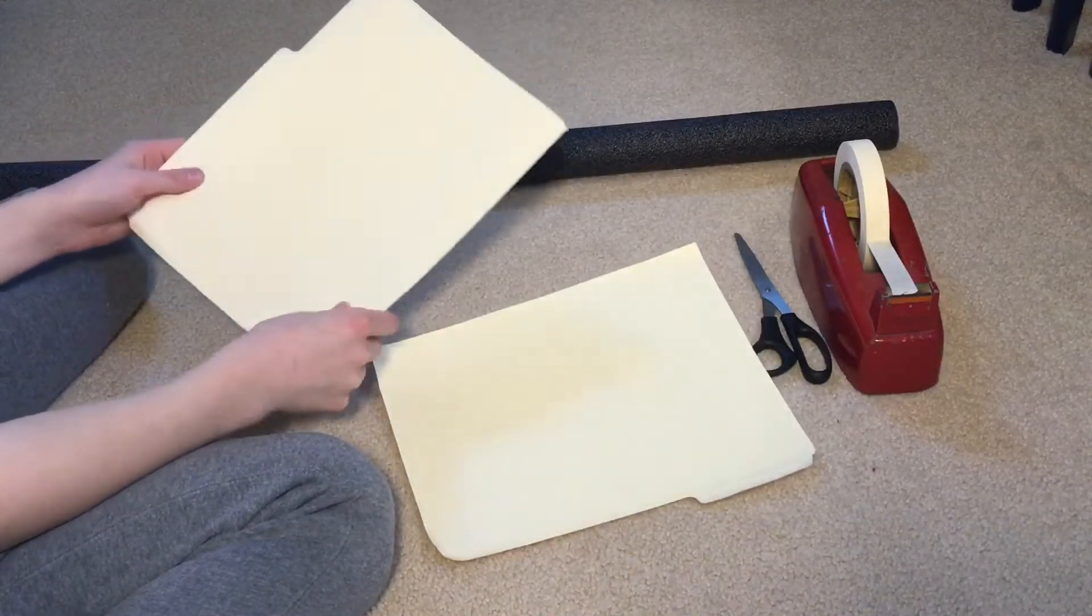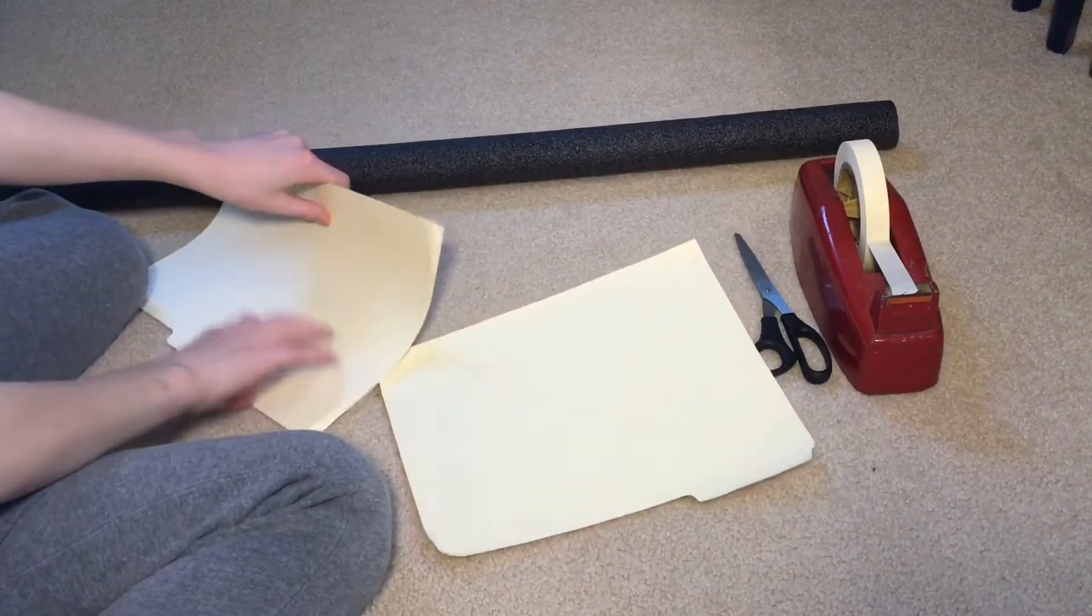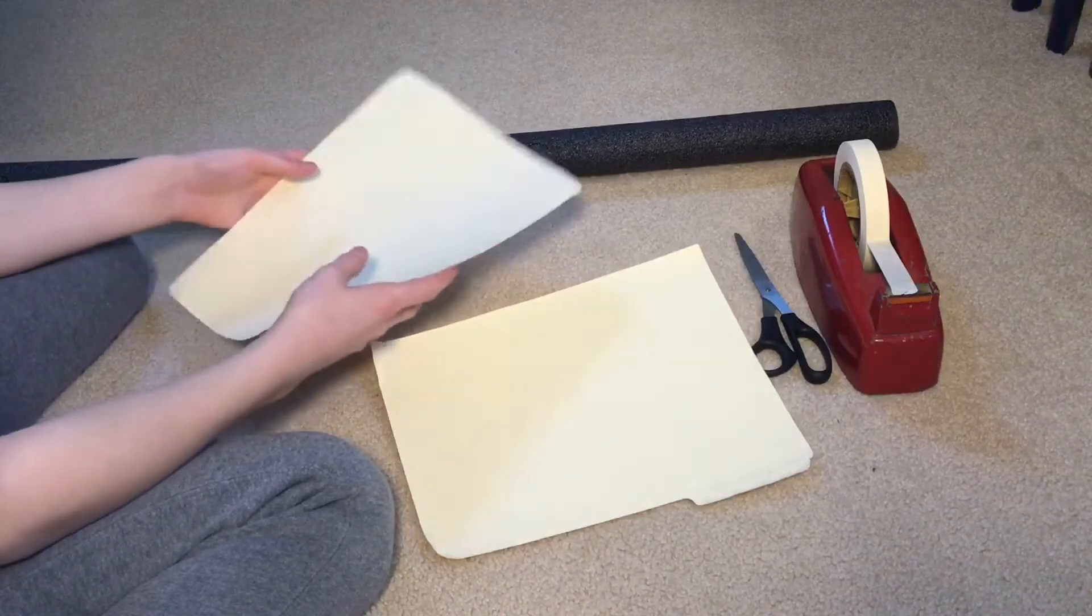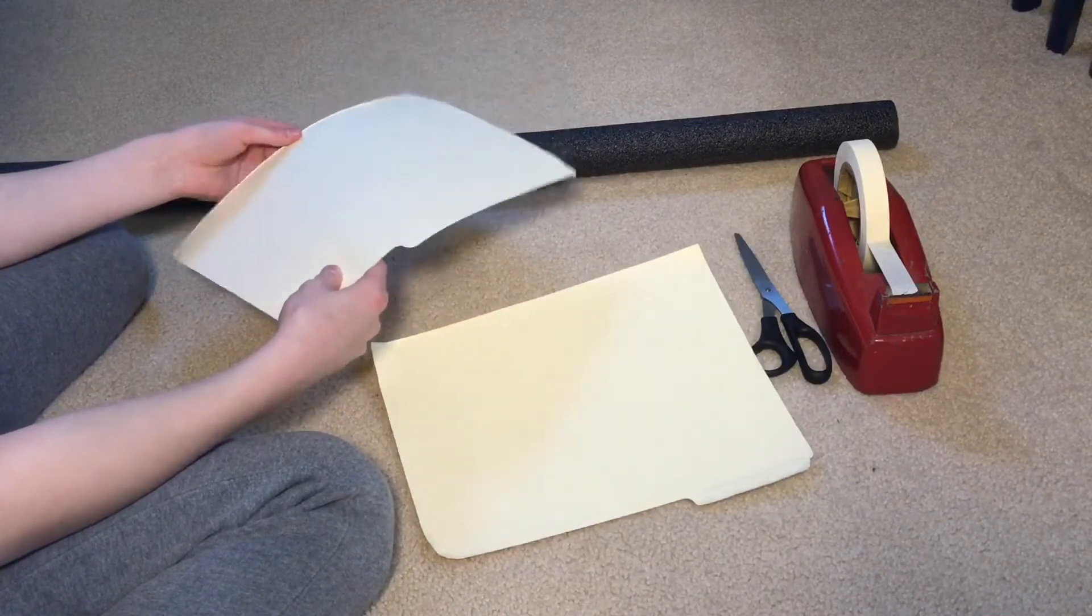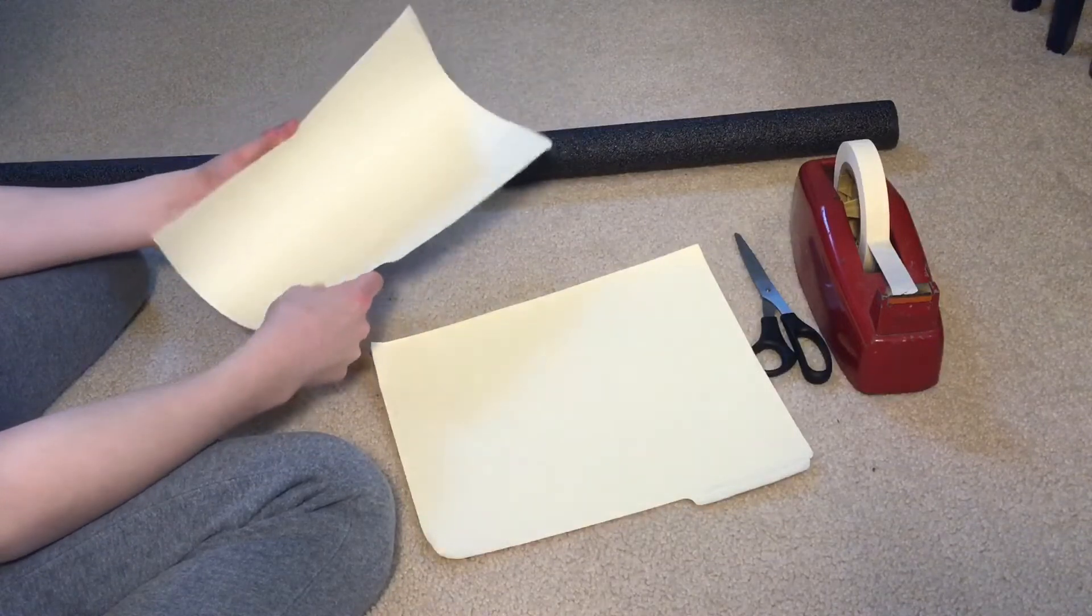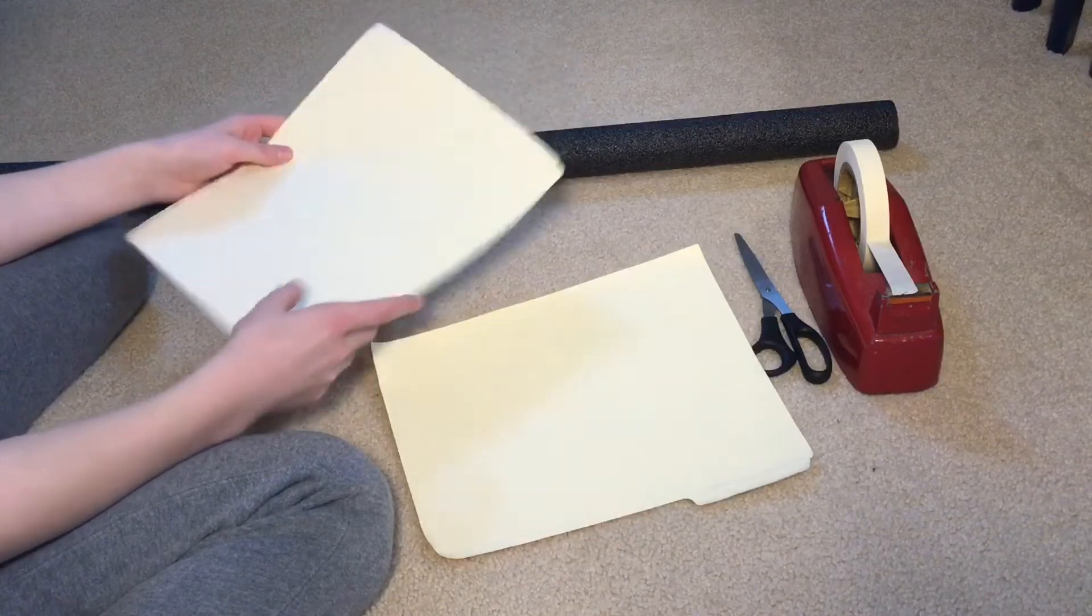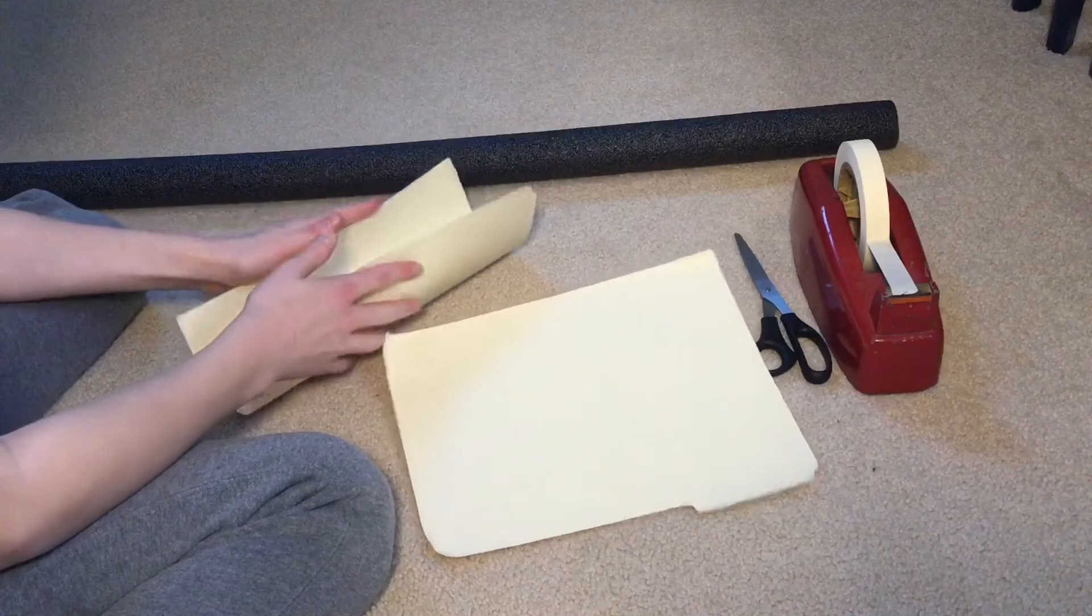So the first thing you want to do with your one side is you want to start rolling it up. This is sometimes difficult to do with one person since vanilla folders are a little stiff. You could also use some cardstock paper, but we used vanilla folders since we had them.